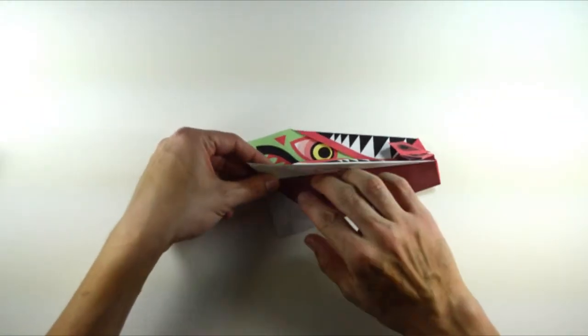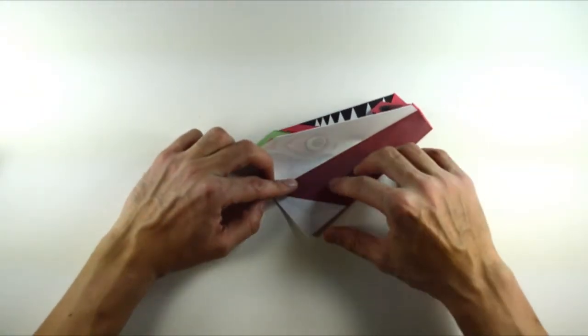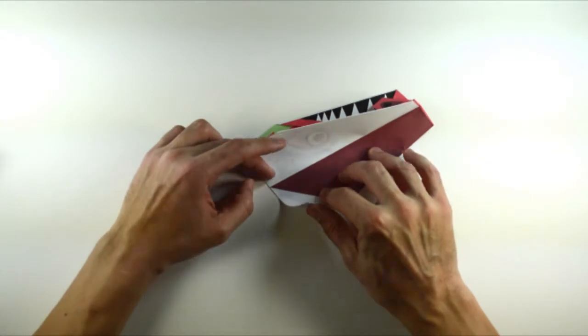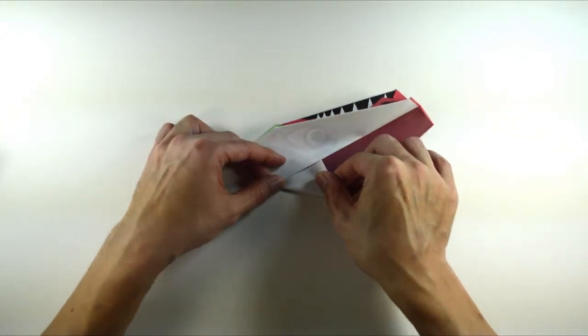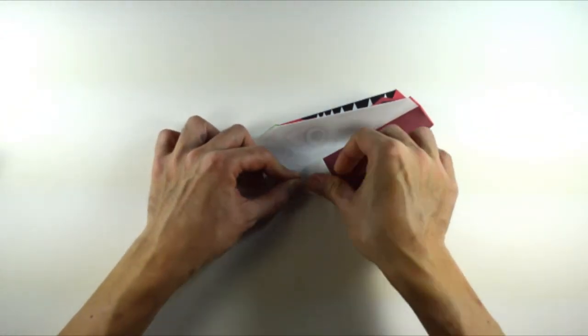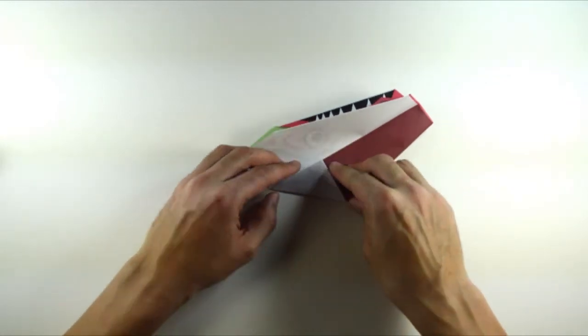Now, we're going to add a lock to the back of the fuselage. Fold the back edge up to the crease where the wing begins.